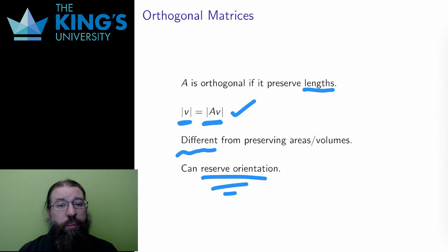These matrices that preserve lengths are called orthogonal matrices. The term is very unfortunate, since orthogonal means perpendicular for vectors, but it means something sort of related, but quite a bit different in this context for matrices. So I'm sorry that the term is confusing, but we are stuck with the standard terminology.